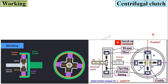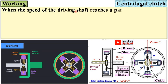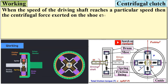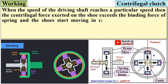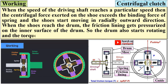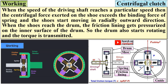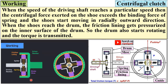Now the working of the centrifugal clutch. With the help of this animation you can understand the engage and disengage positions of the clutch. When the speed of the driving shaft reaches a particular speed, the centrifugal force exerted on the shoe exceeds the binding force of the spring, and the shoes start moving in the radially outward direction. When the shoe reaches the drum, the friction lining gets pressurized on the inner surface of the drum, so the drum also starts rotating and torque is transmitted from the driving shaft to the driven shaft.